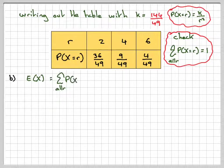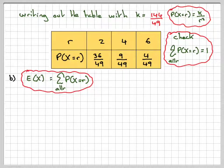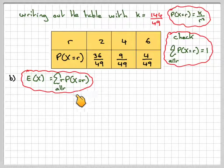b. The expected value is going to be the sigma... Sorry, I'll correct myself. The expected value of the sigma of r times the probability of X is equal to r for all r.